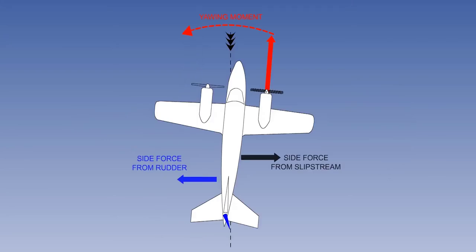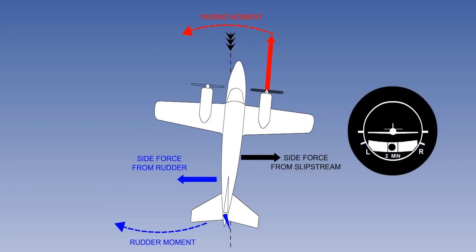In the wings level method, rudder is used to prevent yaw and the ailerons are used to keep the wings level. Yawing towards the live engine gives a side-slip force on the keel surfaces behind the CG opposite to the rudder. The turn indicator will be neutral and the ball central. This paradox of asymmetric thrust, where the aircraft is side-slipping but the ball is in the middle, is the exception to the rule of balanced, coordinated flight.